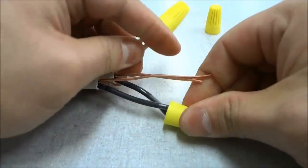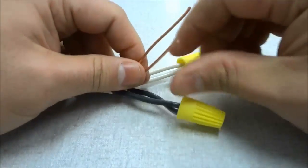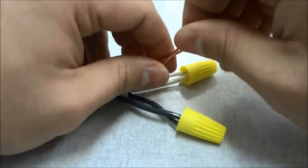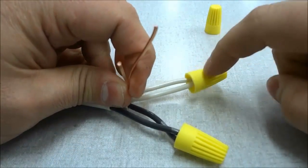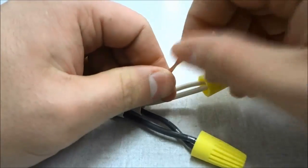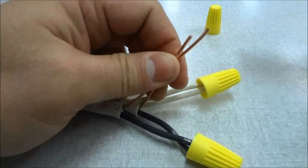The last and final step is to take the two uninsulated wires, the ground wires. Oh, and I forgot to mention by the way that the white wires are the neutral wires. So now we are going to take the uninsulated wires and do the exact same thing.